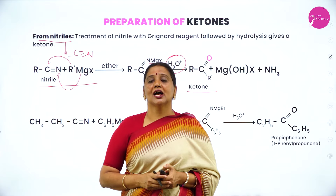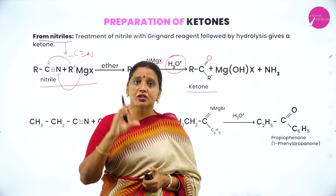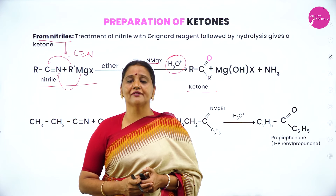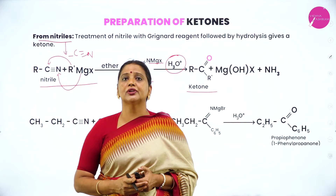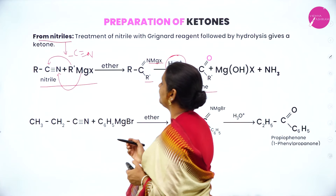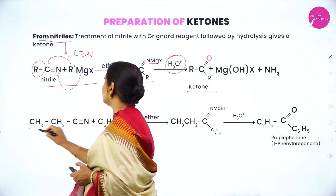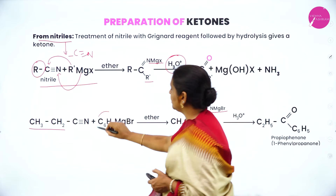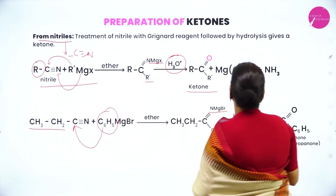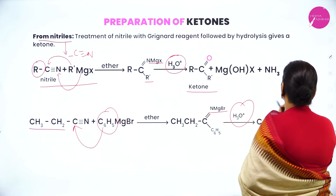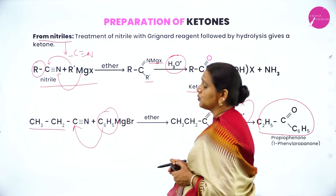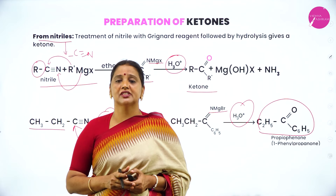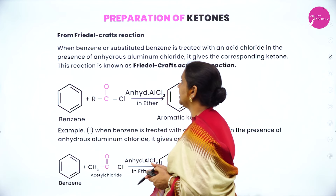Grignard reagents are alkyl or aryl magnesium halide with formula RMgX. This Grignard reagent is added to nitriles — organic compounds having functional group C triple bond N. For example, putting ethyl group CH3CH2 and aryl group C6H5: nitrogen takes MgX and the aryl group adds to carbon, and on acid hydrolysis we get ketone. So the first method uses acid chloride, the second uses nitrile.